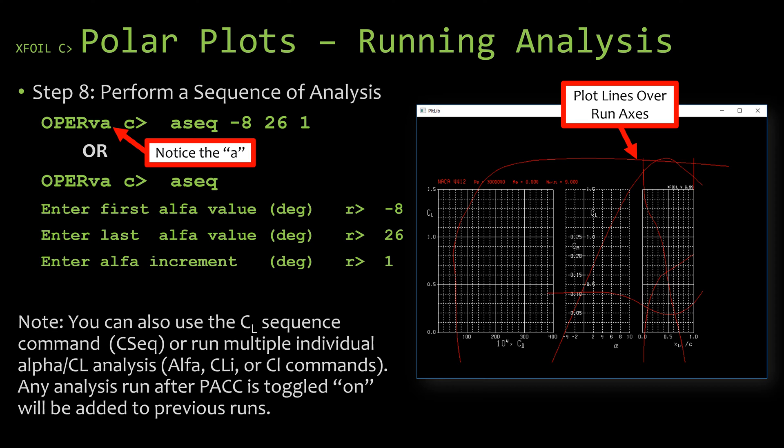There is a way to fix that if you don't do it. You can display the list of your different points and sort it, but we'll cover that in the advanced polar plot video. So at this point I would recommend one of these sequence commands to make sure that you're going in the correct order and covering all the angles of attack that you're wanting to, or if you run them individually, just make sure you start at one end and sweep through all your values in order.